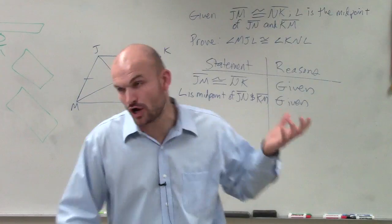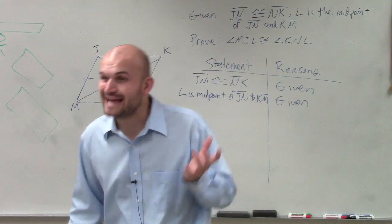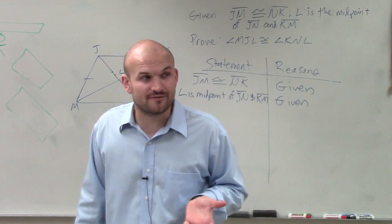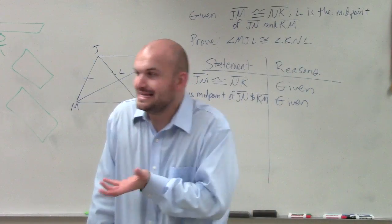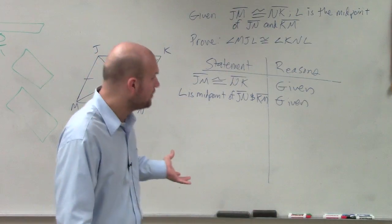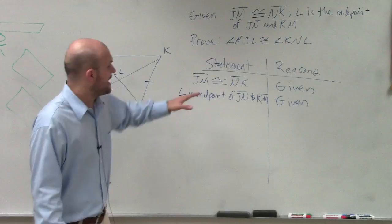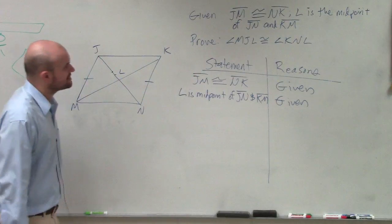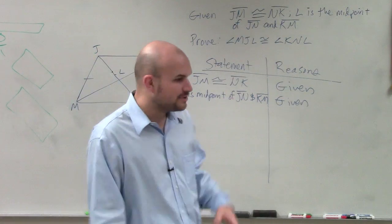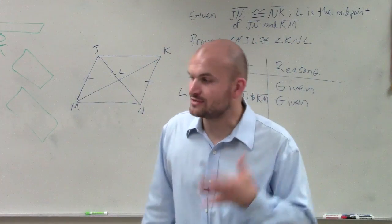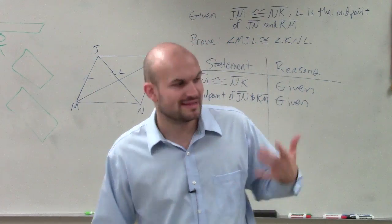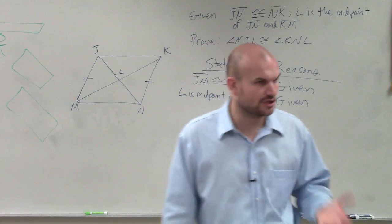Because now we've bypassed all the easy stuff. Now we need to get to the hard stuff of saying, OK, now we need to be able to show that angle MJL is congruent to angle KNL. The only way I'm going to be able to do this, thinking of what we've learned so far, is to prove that these two triangles are congruent.